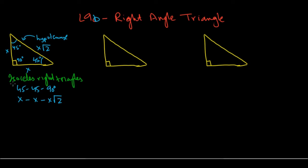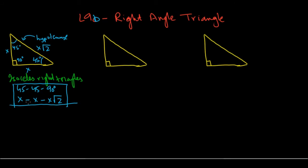So memorize this: if you have a 45-45-90 triangle, the sides are always X, X, X√2, and they go in multiples of this. So let's say the sides are 2 and 2 — the hypotenuse would be 2√2. Let's say the two equal sides are 5 and 5 — then the hypotenuse would be 5√2.